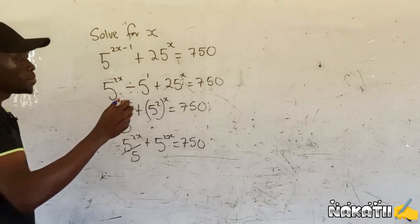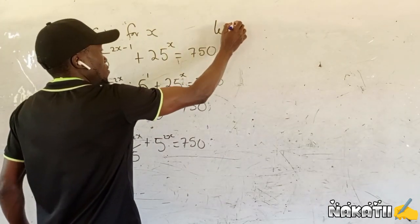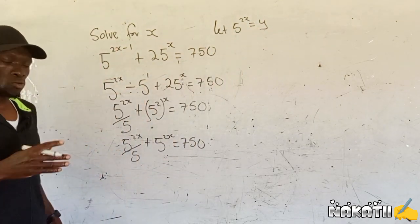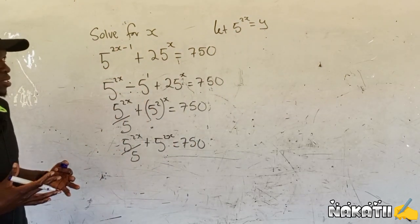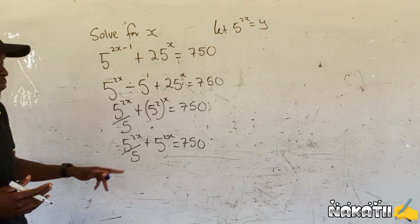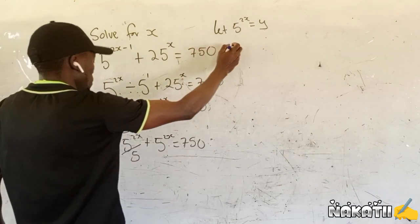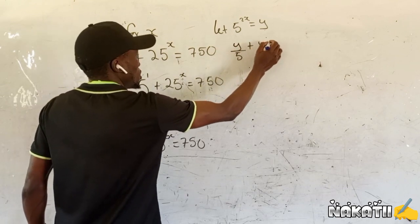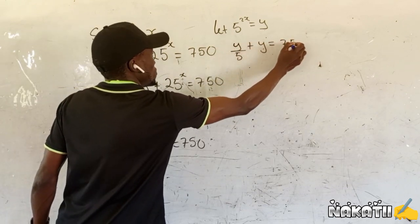Then at this point, you can say let 5^(2x) be equals to y. So where there is 5^(2x), we replace with y. We're going to have y divided by 5 plus y equals 750.